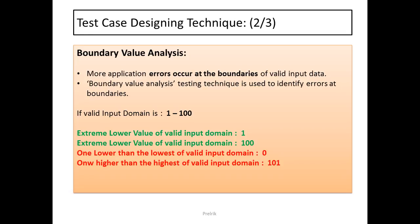For example, if the valid input domain is 1 to 100 — say an age column where you can enter age from 1 to 100 years — you define test cases using BVA by placing the extreme lower value of the valid input domain, which is 1 (shown in green), and the extreme higher value, which is 100. This covers the boundaries of the valid input data.